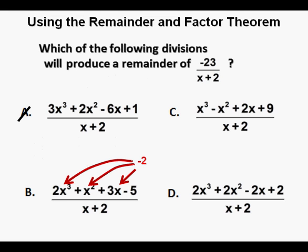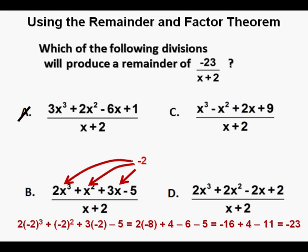Let's come down to answer B and try the same technique. That will give us 2 times negative x cubed plus negative 2 squared plus 3 times negative 2 minus 5. And that simplifies to 2 times negative 8 plus 4 minus 6 minus 5, which simplifies to negative 16 plus 4 minus 11, which equals negative 23.